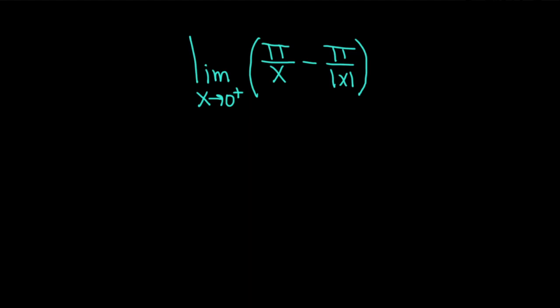Hi, in this video we're going to find a one-sided limit. We have the limit as x approaches 0 from the right of pi over x minus pi over the absolute value of x.